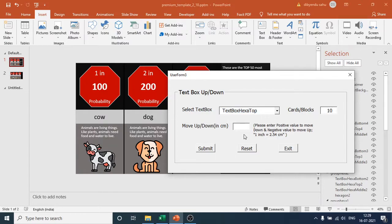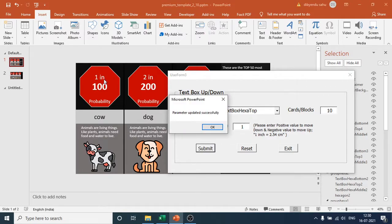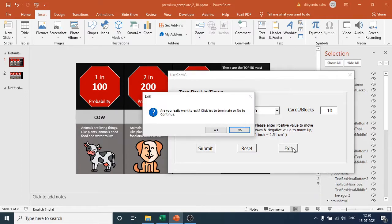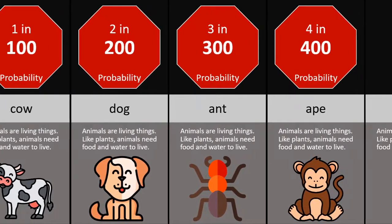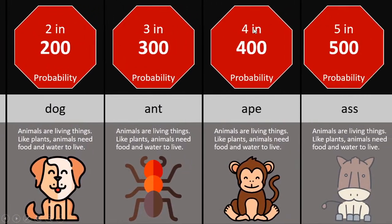Enter the movement value in centimeters. Enter a positive value to move down and a negative value to move up. I want to move down by 1.5 centimeters — enter 1.5 and hit Submit. Exit yes — all the hexagon top text boxes have moved down. Run the presentation to see that all are moved down.